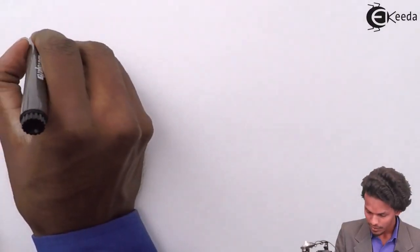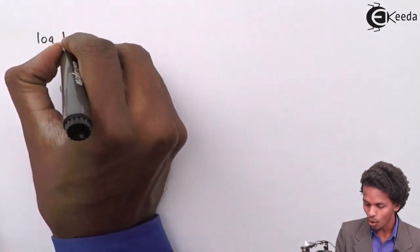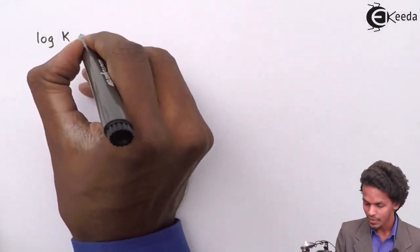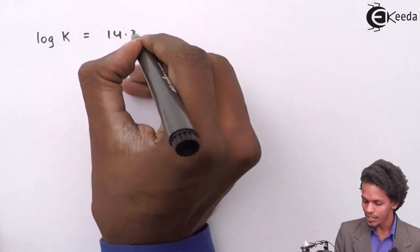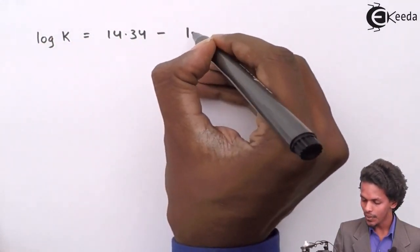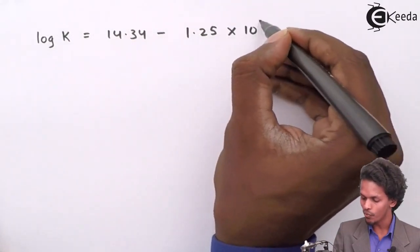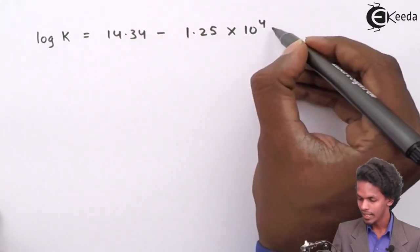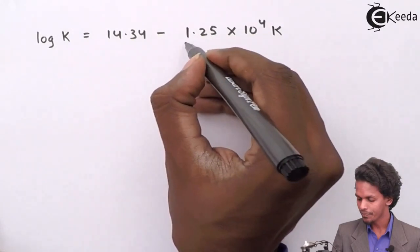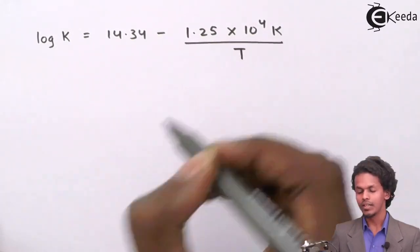The equation itself gives us various data. Let us write the equation and extract the data from it. The equation given is: log K = 14.34 minus 1.25 × 10⁴ K divided by T.